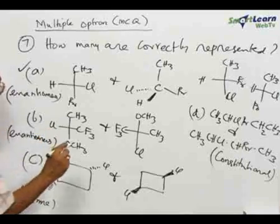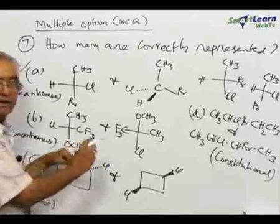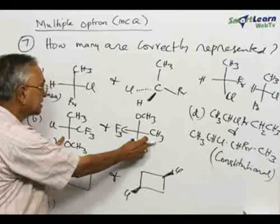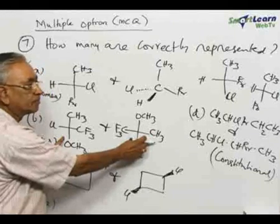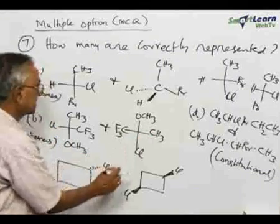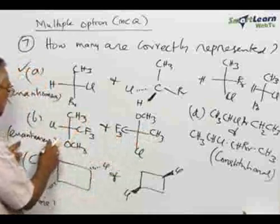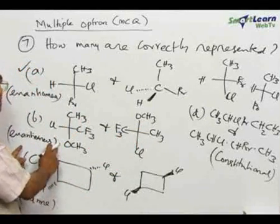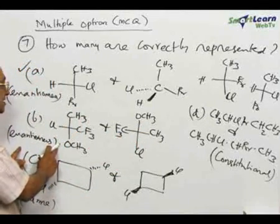Now come to pair B. The same rule applies. Luckily, both structures in pair B are given as Fischer projections. So we only need to compare the two Fischer projections and determine whether the stated relationship — that they are enantiomers — is correct.